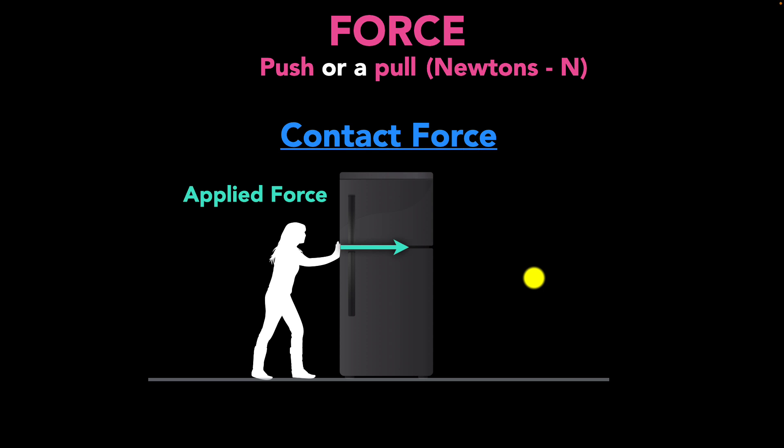So what are the different kinds of contact forces that we have? Well, think about the floor. The floor is pushing up on the refrigerator, so it's exerting an upward force on the refrigerator, making sure it doesn't fall through. We call this the normal force.